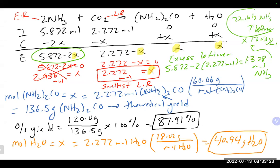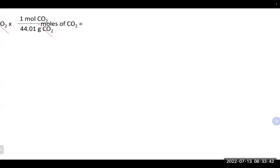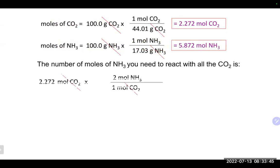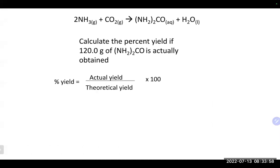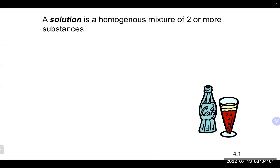You need to be able to solve basic stoichiometry problems, limiting reagent problems, figure out how much product is produced, how much excess reagent is left over. Now we're going to change gears and talk about concentration — specifically solutions and molarity. A solution is a homogeneous mixture of two or more substances.